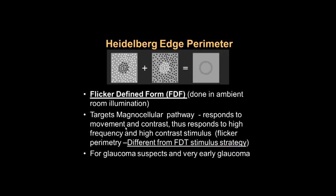Let's look at the Heidelberg Edge Perimeter. Besides regular white-on-white testing, it uses something called flicker-defined form (FDF). This is what the patient sees, and it can be done in ambient room illumination — this instrument can be wheeled into the patient's room. It targets the magnocellular pathway; the response to movement and contrast is what is called flicker-defined form. It is different from the FDT stimulus strategy and is most useful for glaucoma suspects and very early glaucoma.